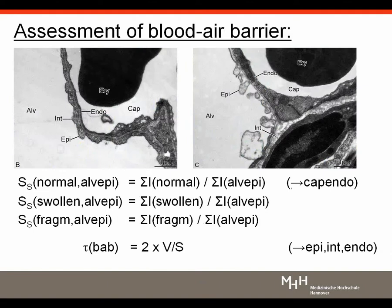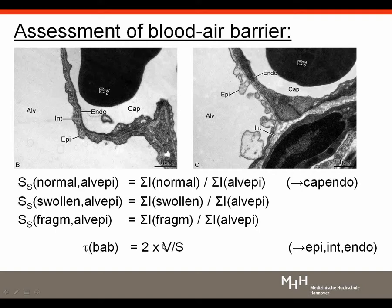The blood-air barrier is a major target in acute lung injury. By counting intersections, we can estimate the relative surface fractions of the alveolar epithelium and capillary endothelium at different degrees of preservation — for example, the fraction of normal, swollen, or fragmented epithelium, which are typical signs of acute lung injury. The mean thickness of the blood-air barrier can be derived from existing data as two times the volume-to-surface-area ratio of alveolar septal tissue.